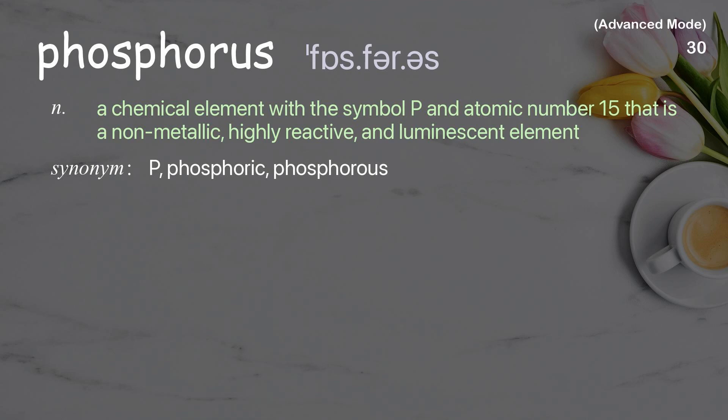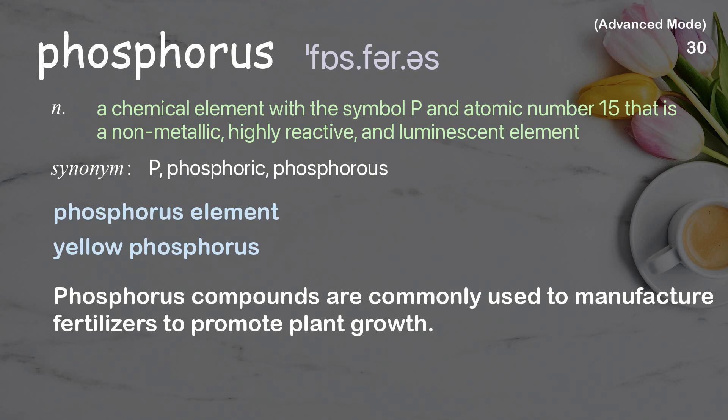Phosphorus: a chemical element with the symbol P and atomic number 15, a non-metallic, highly reactive and luminescent element. Examples: phosphorus element, yellow phosphorus. Phosphorus compounds are commonly used to manufacture fertilizers to promote plant growth.